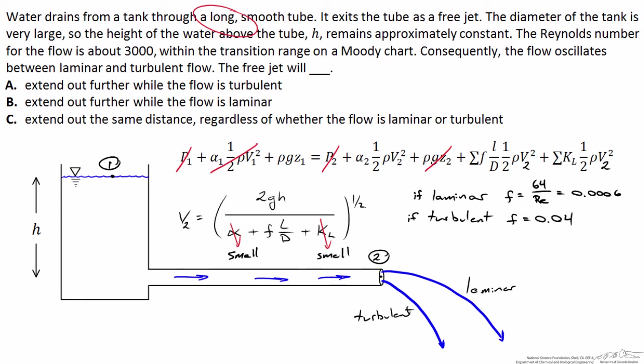What that says is if the flow is turbulent, f is relatively large, is larger than if it was laminar. Consequently that reduces the velocity at point two, and indeed the correct answer here is that the flow will extend out further if it is laminar flow and not quite as far if it was turbulent.